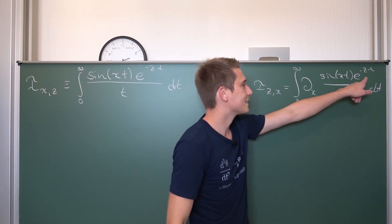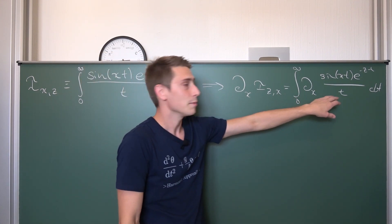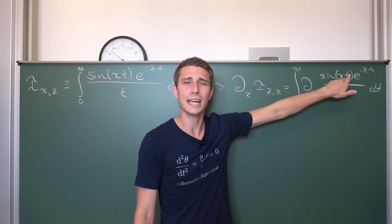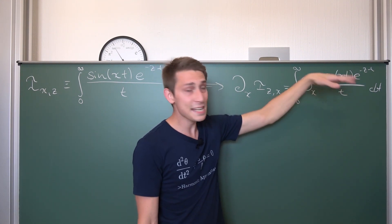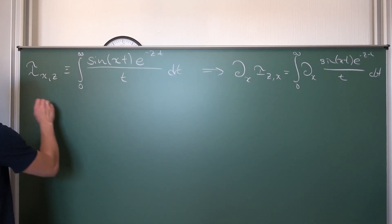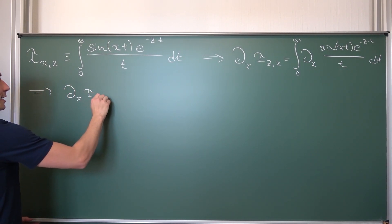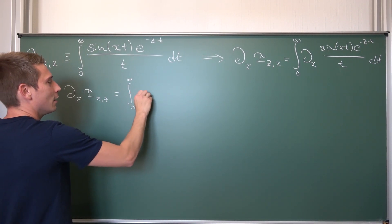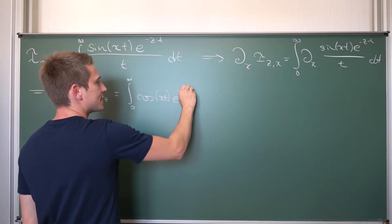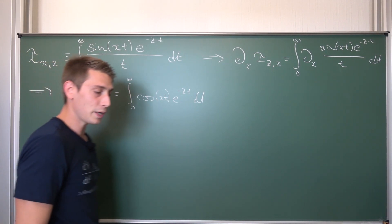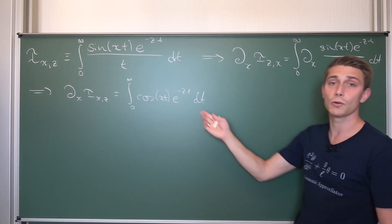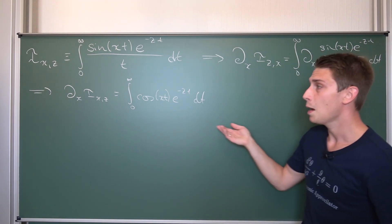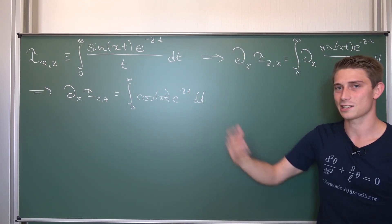You might notice that e^(−zt)/t is independent with respect to x, meaning we can bring it to the front and just differentiate sine(xt) with respect to x. By the chain rule, we get t · cos(xt), and the 1/t cancels out, leaving us overall with ∂/∂x of I(x, z) being equal to the integral from 0 to infinity of cos(xt) · e^(−zt) dt. We already came pretty far. You could use integration by parts two times and a Phoenix integration technique to get a closed expression.